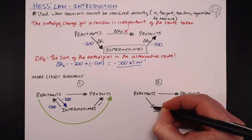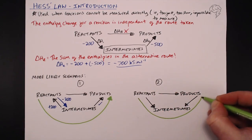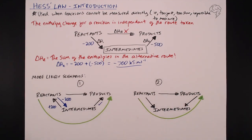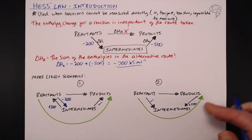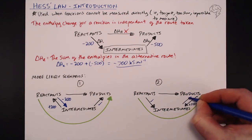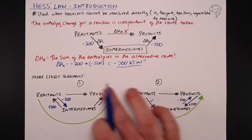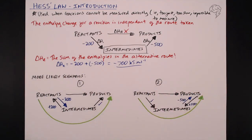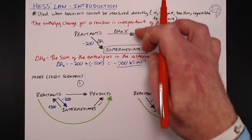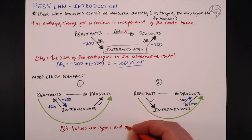In scenario two, we have a similar issue but with a different arrow going the wrong way. This time it's the arrow from products to intermediates that's incorrect. If that value is plus 500 kilojoules per mole, we need to flip that arrow around, making it equal and opposite at minus 500 kilojoules per mole. The rule still applies: the sum of the enthalpies in the alternative route equals our delta H-r, but we need to do some manipulation of these numbers first.